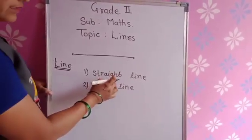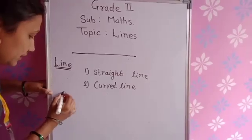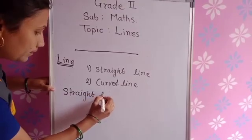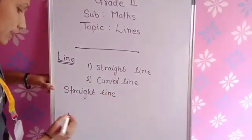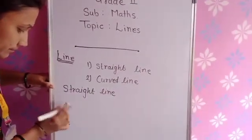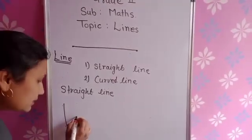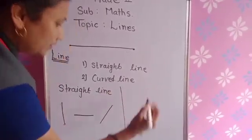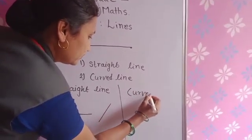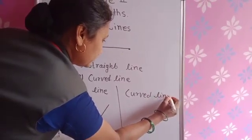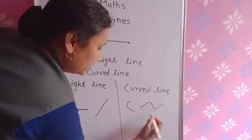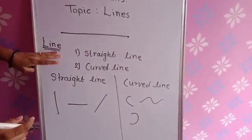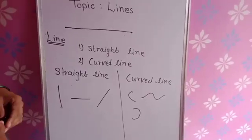In a straight line, there are again three types: a standing line, slipping line, and sliding line. And a curved line — these are the curved lines. These are the types of lines we learned in the first standard.